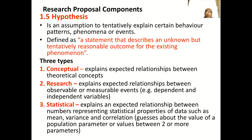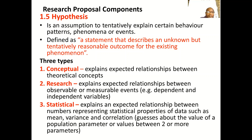A research hypothesis describes the expected relationship between two observable variables — dependent or independent — where one depends on the other. For example, in fracture femur management, the type of intervention determines the health outcome: using a plaster of Paris versus internal fixation will not yield the same results. A statistical hypothesis explains an expected relationship between numbers, representing statistical properties of data such as mean values and correlations, and concerns the value of a population parameter.